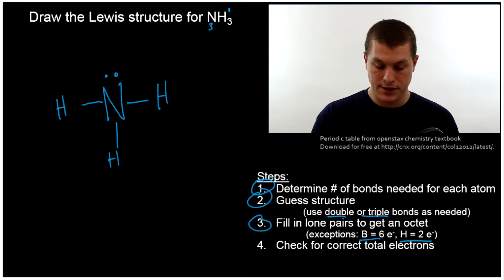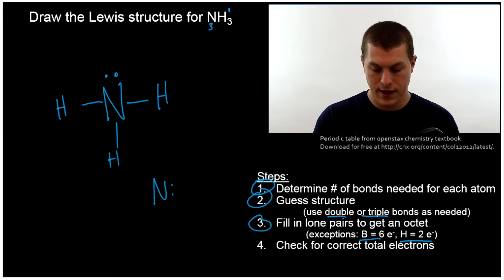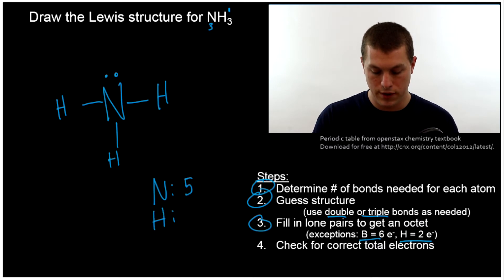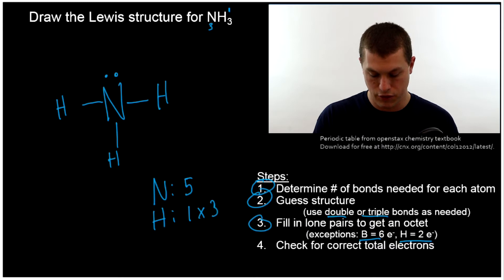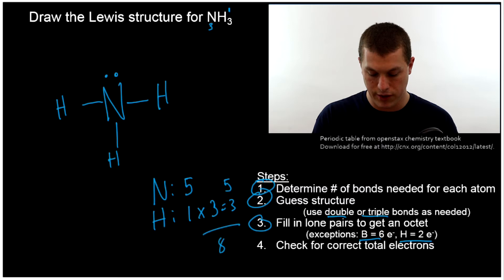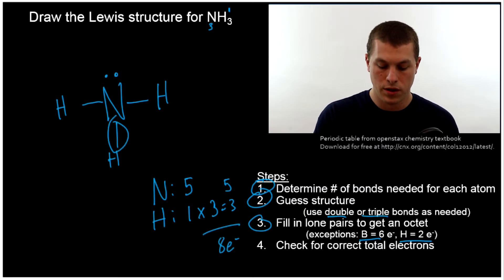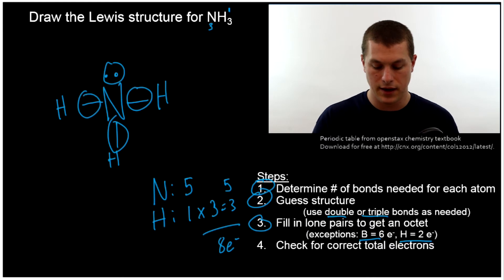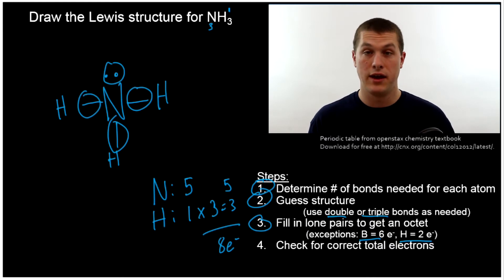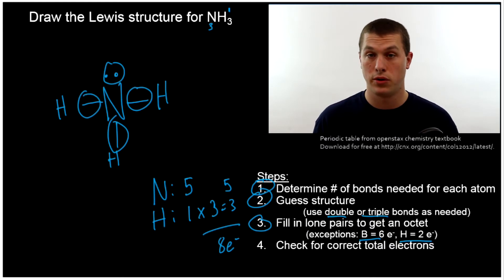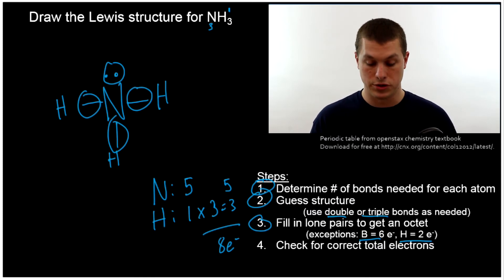A nice way to check this is to remember that nitrogen has five valence electrons, and hydrogen has one valence electron — and there are three hydrogens. So we multiply hydrogen times three to get three, add five, and we get eight total electrons. We should see eight total electrons in our structure, and counting them: one, two, three, four, five, six, seven, eight. Eight total electrons in the valence means we have the correct count, our structure meets all bond requirements, and we've added lone pairs — so we have our Lewis structure.